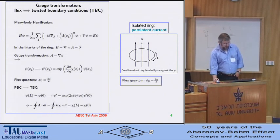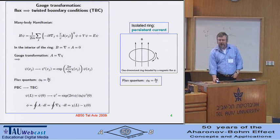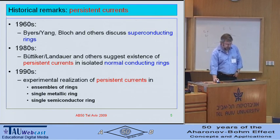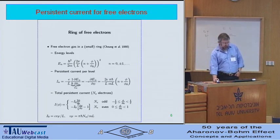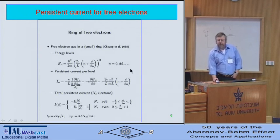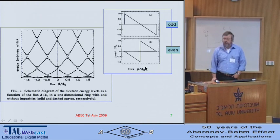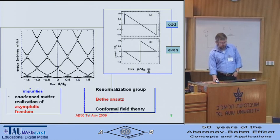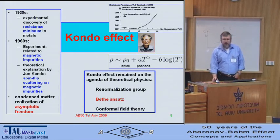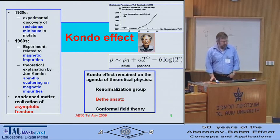A flux translates into twisted boundary conditions. I can make use of lots of results from my previous speakers who already pointed out all the results I need to describe my system. I can also skip the historical remarks, just reminding you that in this business, theory was quite well ahead of experimental possibilities. Just to get a baseline, I will remind you of the persistent current of free electrons — not in formulas but as pictures. You see the typical sawtooth behavior of the persistent current as a function of magnetic flux. The previous speaker, Sergio, also told you a lot about the Kondo effect, so I can be brief here.